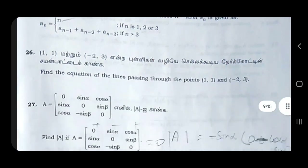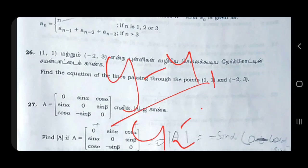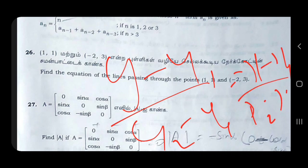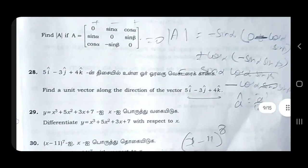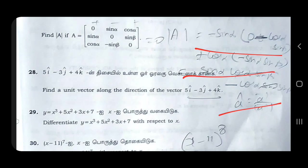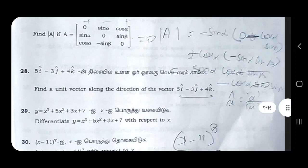Find the equation of the line passing through the points: (y - y1) / (y2 - y1) = (x - x1) / (x2 - x1). This is the equation of the line. This is the answer.